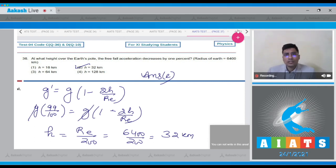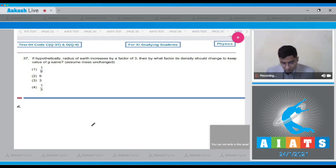Now let us solve question 37. The acceleration due to gravity is equal to gm by r square. In terms of the density, this can be written as 4 by 3 into pi into g rho r. For g to be constant, rho r should be constant.